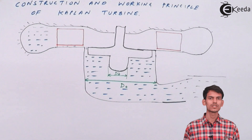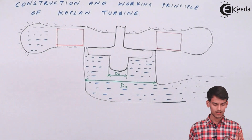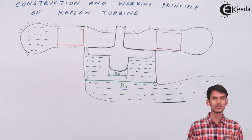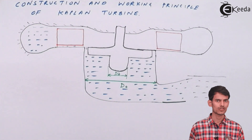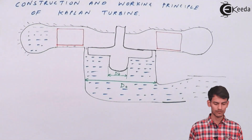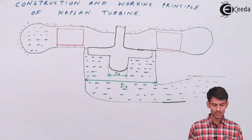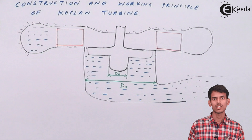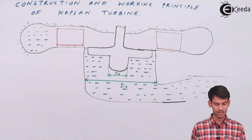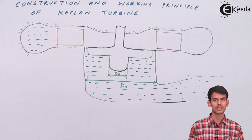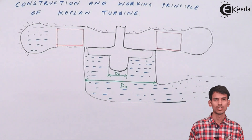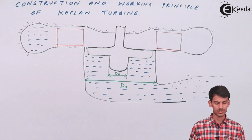What I have drawn here is the front-view cross-section of the Kaplan turbine. This is the front view and cross-section of the Kaplan turbine, and if you look at it, it will appear something like this. I will write the names of the different parts, and then you will come to know how it works.